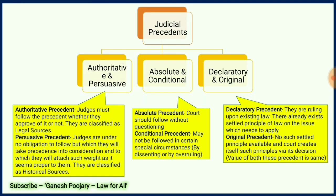This slide is the heart of this entire presentation, where I am discussing the types of judicial precedents. There are three major categories: authoritative and persuasive, absolute and conditional, and declaratory and original. Authoritative precedents are those which must be followed by the court, whereas persuasive ones give judges options. Absolute precedents must be followed by the court, whereas conditional ones can be referred case by case. Declaratory precedents are those settled in court and need to be followed, whereas original precedents are new precedents coming before the court. These are the major types of precedents you need to remember. Please take a screenshot and read through for more information.